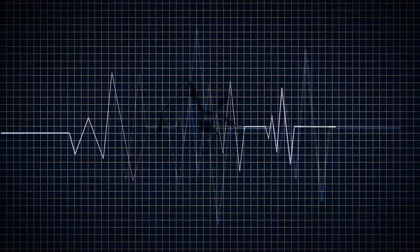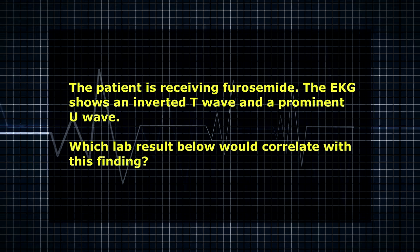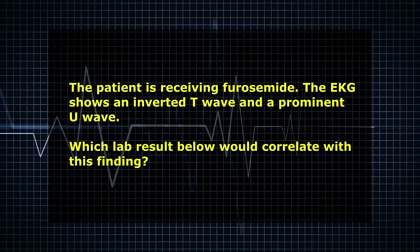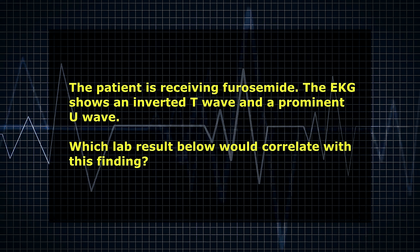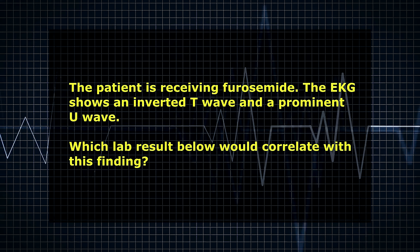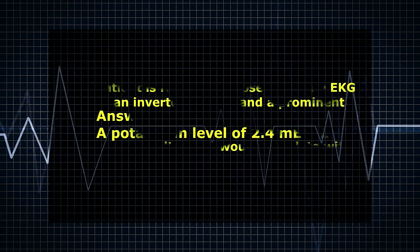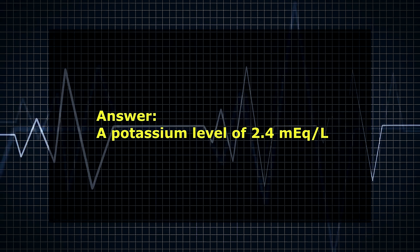For example, let's say you're practicing pharmacology and you got a question wrong about furosemide. The question was something like: Patients receiving furosemide, you notice on their EKG they had an inverted T wave and a prominent U wave. Which lab result would correlate with this finding? And you got that wrong. The answer was a potassium level of 2.4. When you're reviewing, first look at furosemide. What is this? This is Lasix, that's its brand name. It's a loop diuretic.